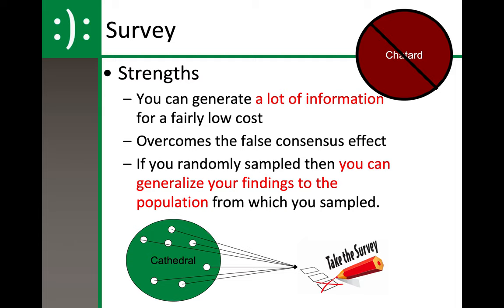Since we are a school of 14 to 18 year olds, we can make some generalizations about 14 to 18 year olds as long as we get a large random sample. If you only choose your friends, that's not random sampling. If you only choose the football team, that's not random sampling. If you only choose the theater department, that's not random sampling. It is legitimately random — walking up to people in the hallway or sending it out to a hundred random people. That's how you get the randomness of it.